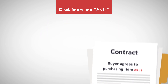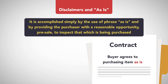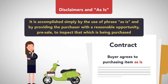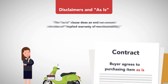While the As-Is idea also is meant to avoid liability, it is accomplished simply by the use of the phrase As-Is and by providing the purchaser with a reasonable opportunity pre-sale to inspect that which is being purchased. In this way, the As-Is clause does an end run around the idea of implied warranty of merchantability.